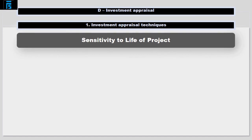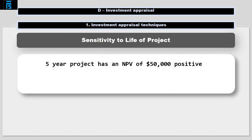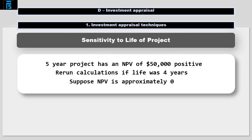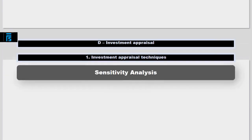Finally with sensitivity analysis, let's consider sensitivity to the life of the project. Our 5-year project has an NPV of $50,000 positive. Suppose we re-run the calculation as if the project was a 4-year project and the NPV turns out to be approximately zero if it only lasts for 4 years. The percentage sensitivity to the life of the project will be calculated as follows: 5 minus 4 divided by 5 equals 20%.